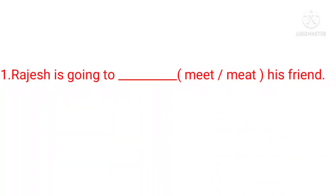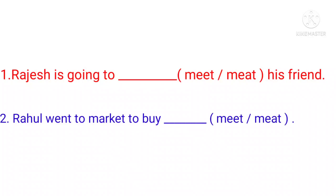Now observe the second sentence: Rahul went to market to buy (meet / meat). Children, what is your answer? Very good children. Here, the second word M-E-A-T, meat, is the right answer. Though we answered right in the given examples, we faced some confusion while answering, because their sound is the same and they appear almost alike.